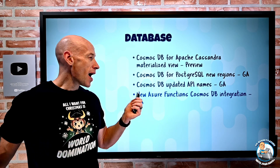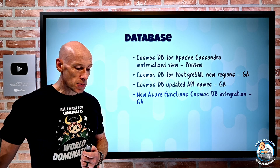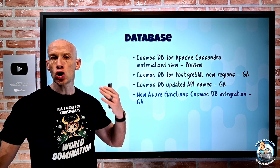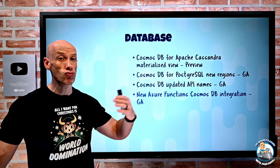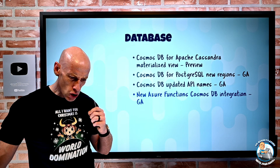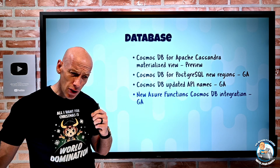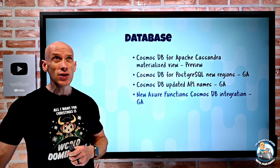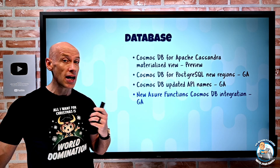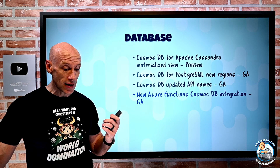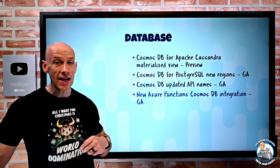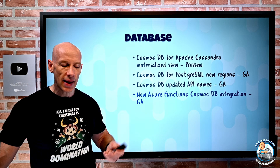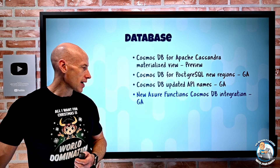There's new Azure Functions Cosmos DB integration offering higher performance for both triggers and regular binding. It uses the new V3 Cosmos database SDK, which enables things like Azure AD based authentication instead of using the primary key — that's optional, but it opens up those capabilities.